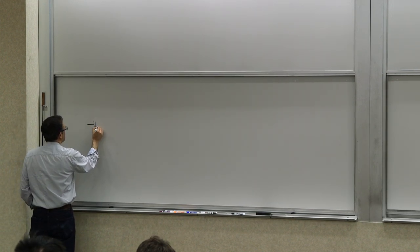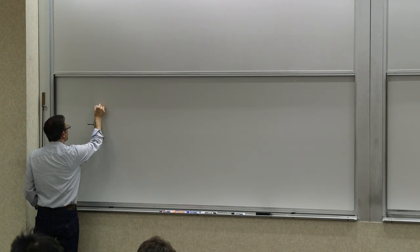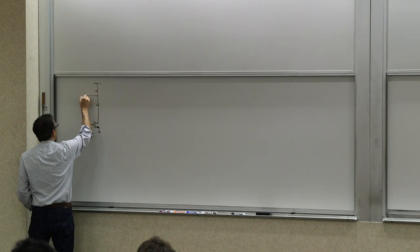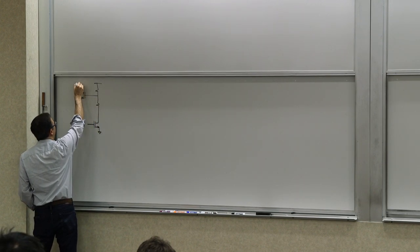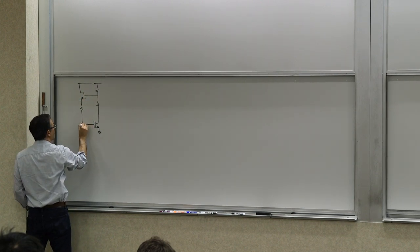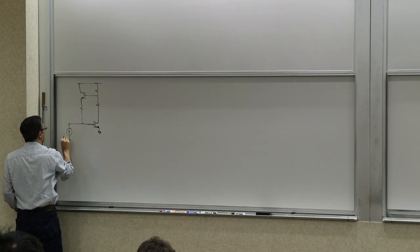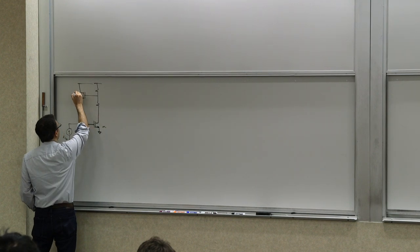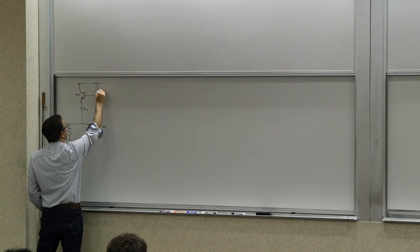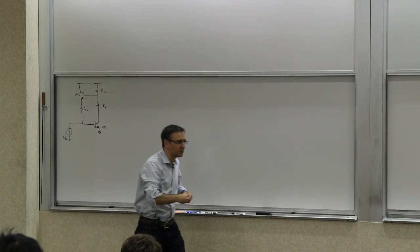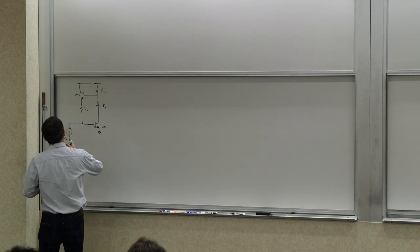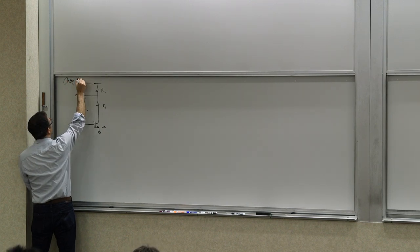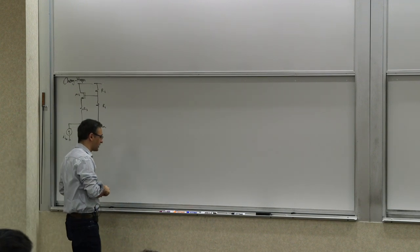Let's look at the stage. It may be implemented in a differential implementation too, but it looks something like this. You have a forward path that's like a common source or common emitter, and then in your feedback path you have a follower stage. Let's call this M1, M2, R3, R2, and R1. This stage is called Cherry-Hooper, named after the two people who developed it.